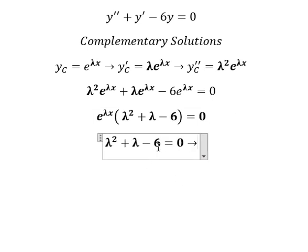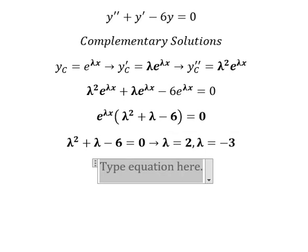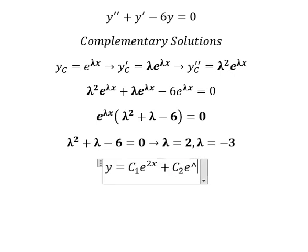So we have lambda equals to 2 and lambda equals to negative 3. And now we have the final answer: y equals to c1 e to the power of 2x plus c2 e to the power of negative 3x.